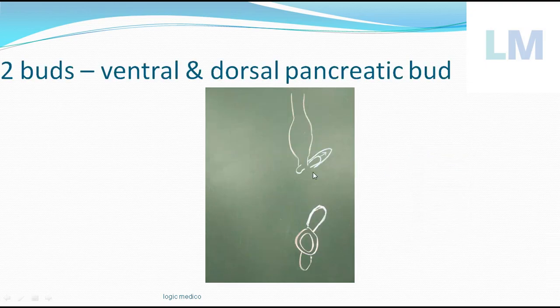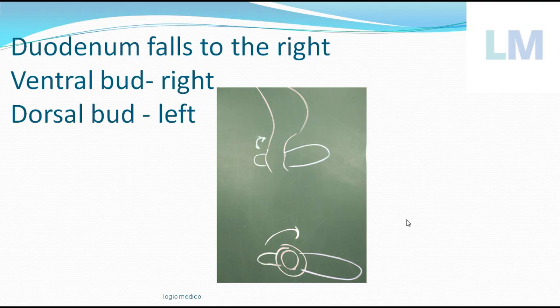After the duodenum, which was initially facing ventral, falls to the right side, the ventral pancreatic bud is now on the right side and the dorsal pancreatic bud is on the left side. The ventral pancreatic bud, which had a bifid nature, unites to form a single portion and grows onto the posterior aspect of the duodenum to touch the lower portion of the dorsal pancreatic bud.